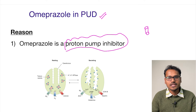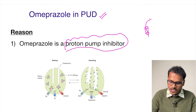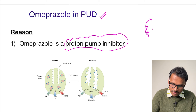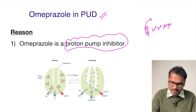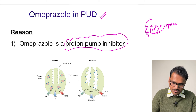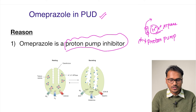Whenever there is a secretion of HCl, it is produced by the parietal cells of the stomach and secreted into the lumen. While secreting, they use a pump called the hydrogen-potassium ATPase pump. This pump is also called the proton pump because of the H+ ion, and omeprazole is going to inhibit this proton pump — hence it is called a proton pump inhibitor.